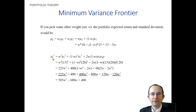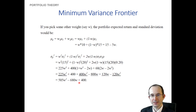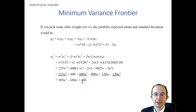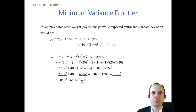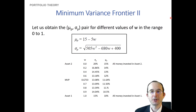For the variance of the portfolio, we take the variance formula, plug in our weights, collect terms, and simplify. We get a quadratic expression where the portfolio variance is based on the weight to the first asset squared, minus a linear term in that weight, plus a baseline of 400. Now that we have functions for both the mean and variance for any arbitrary weight, let's look at the possible combinations.